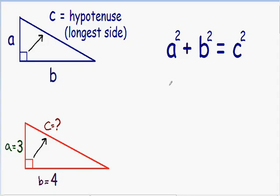Our a is equal to three, so instead of a squared I'm going to write three squared. Plus b squared — and our b is equal to four, so instead of b squared I'm going to write four squared. And this is all equal to c squared. We don't know our value for c yet, so I'll just keep it as c squared.